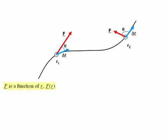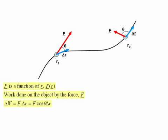The work done on the object by the force f during a displacement delta r is given by delta w equal to the scalar product between f and delta r, which is equal to f cos theta times delta r.